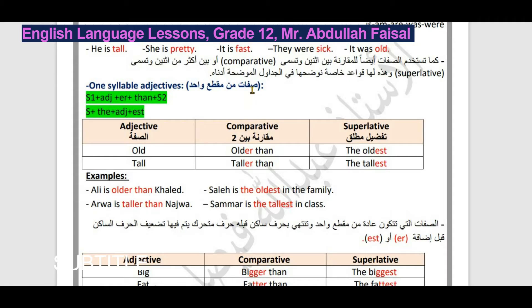هناك شيء مهم: الصفة أحياناً تكون من مقطع واحد وأحياناً أكثر من مقطع. يجب أن نعرف معنى syllable، أي مقطع. كيف أعرف عدد المقاطع؟ نعرف ذلك من خلال عدد الحروف الصوتية المنطوقة في الصفة. مثلاً كلمة old فيها حرف صوتي واحد وهو O، وكلمة tall فيها A. الحروف الصوتية هي: A, E, I, O, U وتسمى vowels.